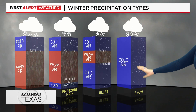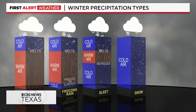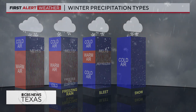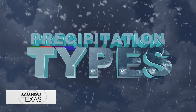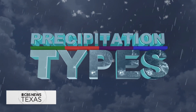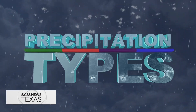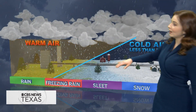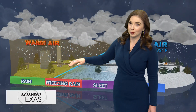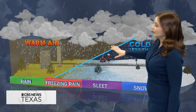With snow, however, that entire column of air is below freezing — it's all cold — so it stays snow once it falls out of the cloud base. Here's another way to take a look at it: when we have that warm air nudging in from the south, this is kind of what we're going to be seeing in north Texas as we have this winter storm moving in.